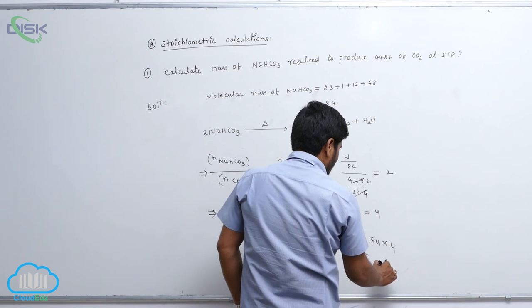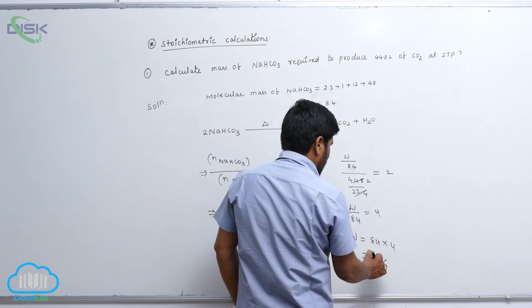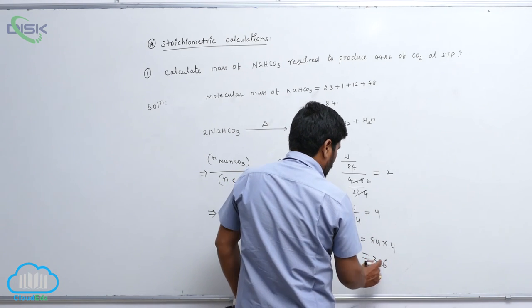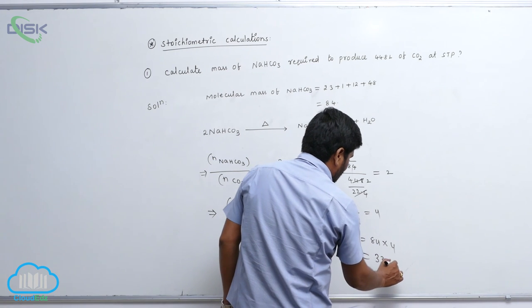So therefore 4, 4s are 16, okay, by 32 plus 1, 33. So therefore how many grams? 336 grams is correct.